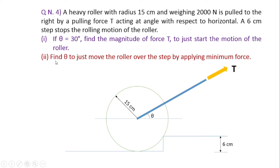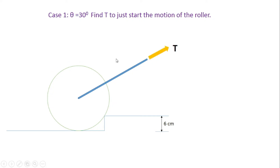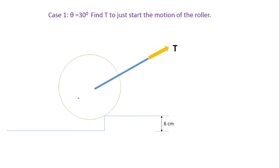Second: find theta to just move the roller over the step by applying minimum force. If only one part is asked it can be asked for four to five marks, or if two parts are asked it can be asked for eight marks. So mark it as a very important question. For the first case, theta is equal to 30 degree. When the applied force is sufficient, the roller will start its motion over this step. During this motion, the roller will lose its contact from the surface, so there will be contact between the step and the roller.